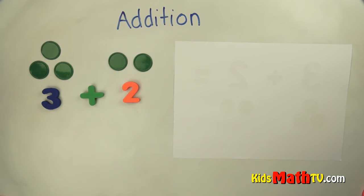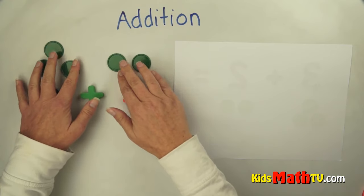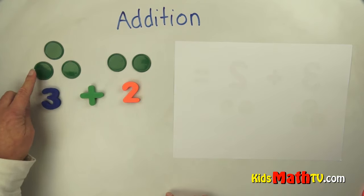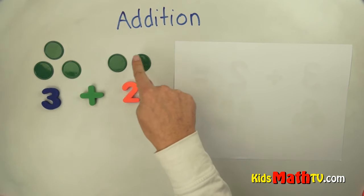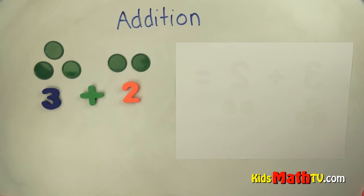This is the addition sign. This means to put them together. So if I put them together, I add the two and the three. Let's count how many all together. One, two, three, four, five. There are five.